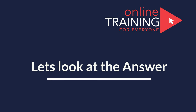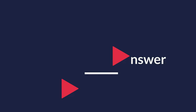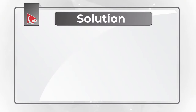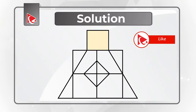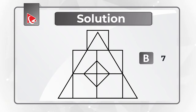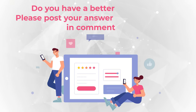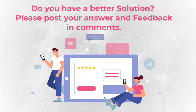I counted 7 squares, so my answer is Choice A. Let me show them all to you: 1, 2, 3, 4, 5, 6, and 7. Do you have a different number? Please make sure to post your solution in comments. And if you need more questions like this, please make sure to check out the description for additional resources.